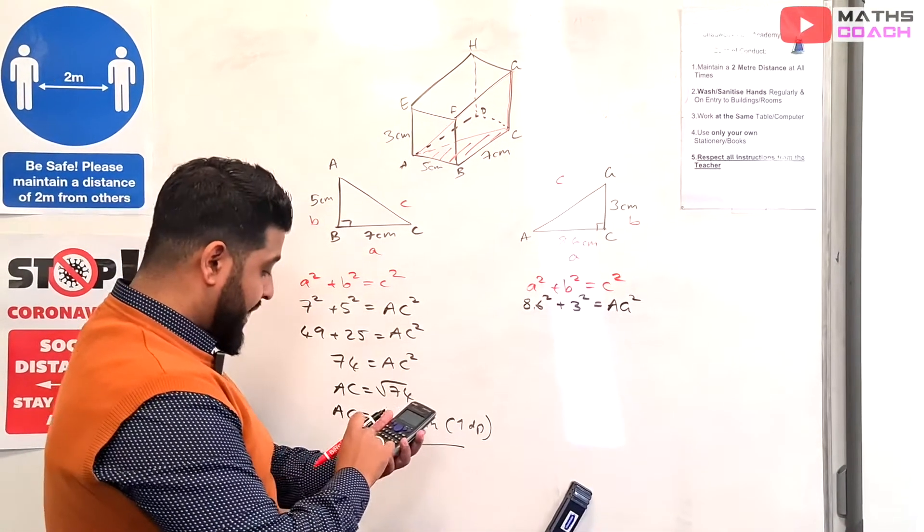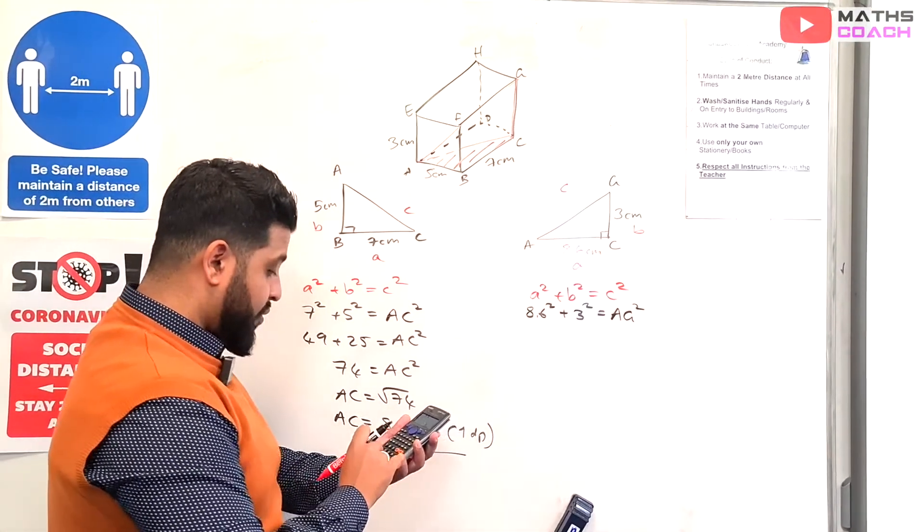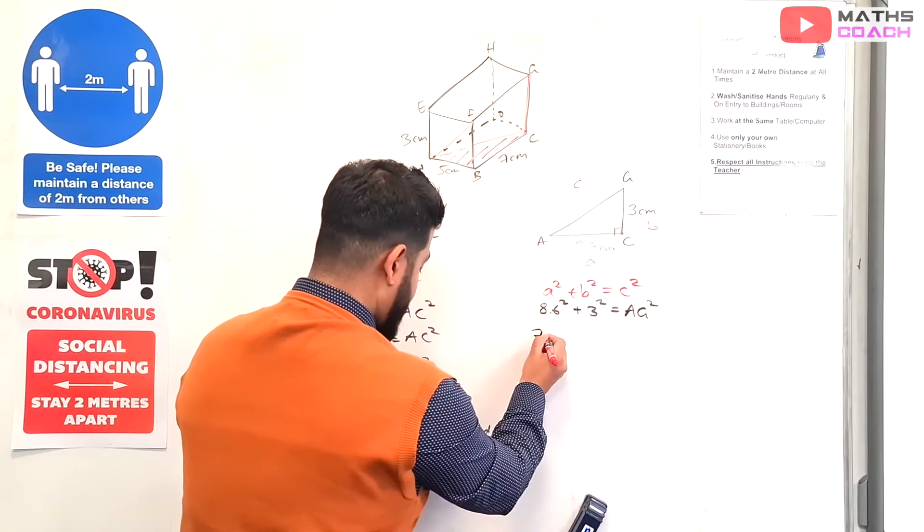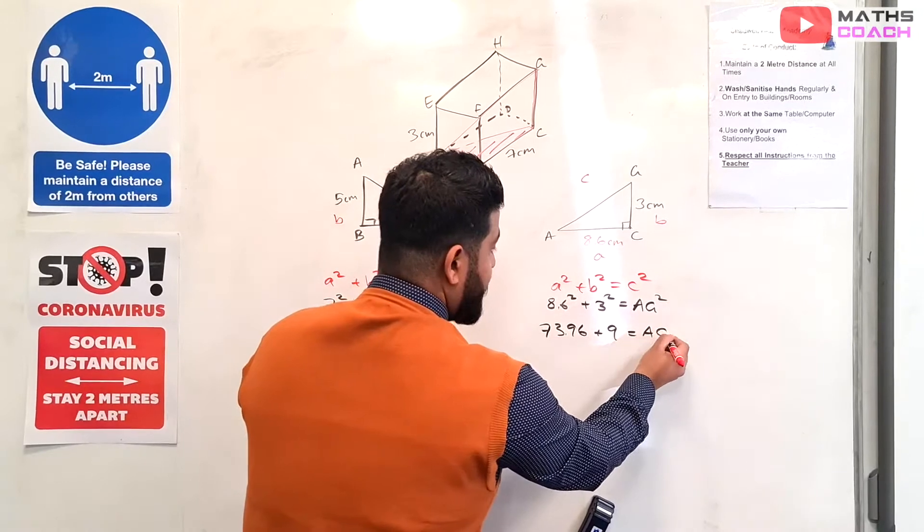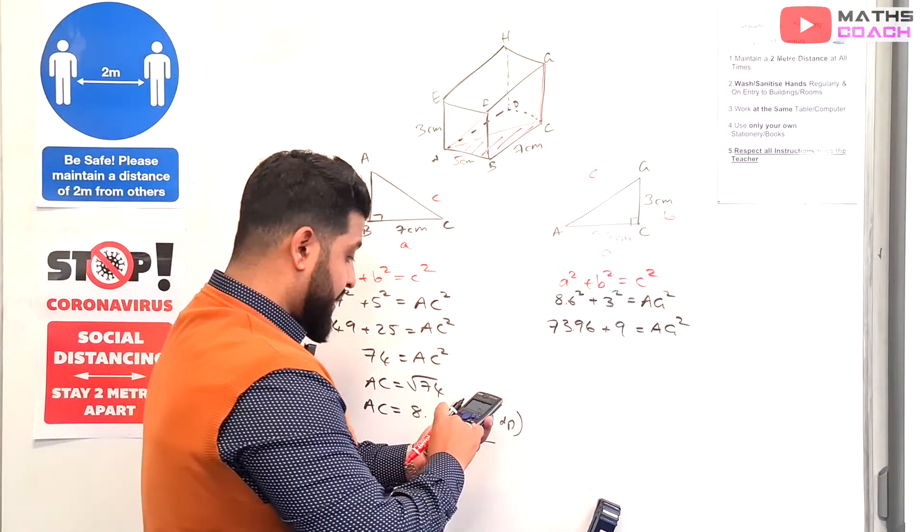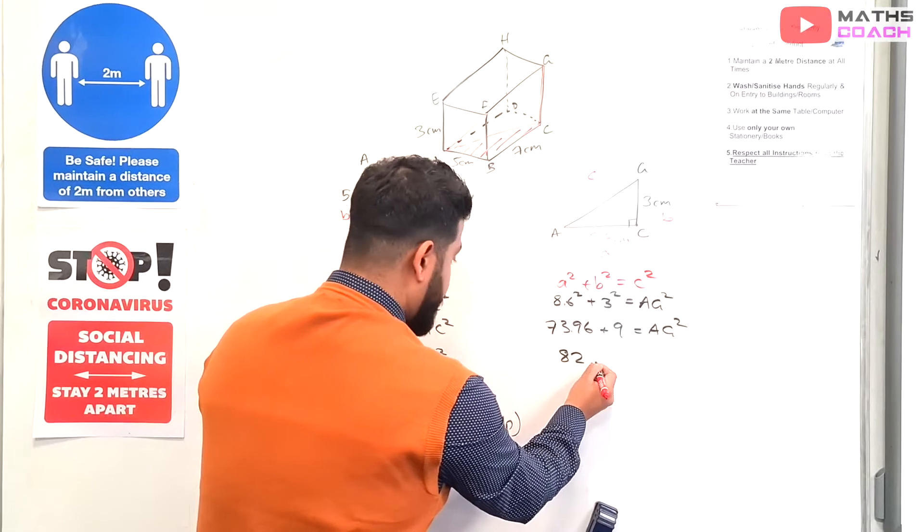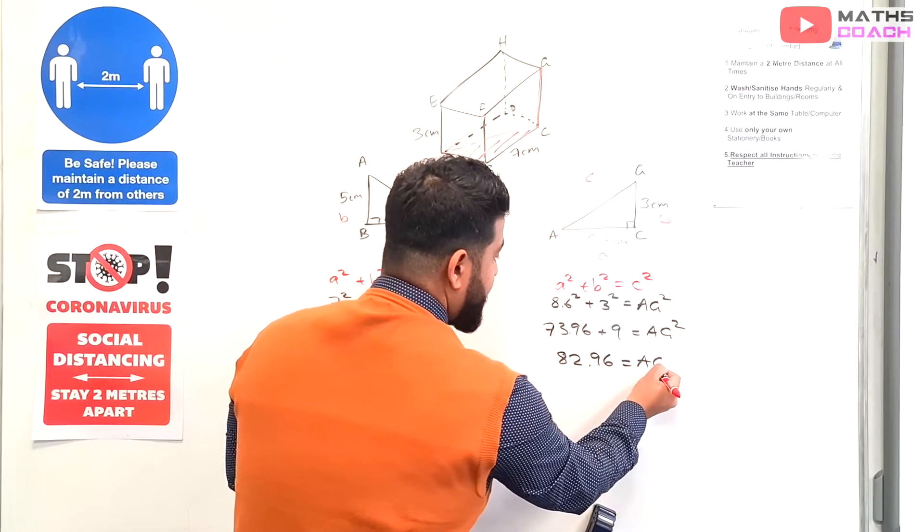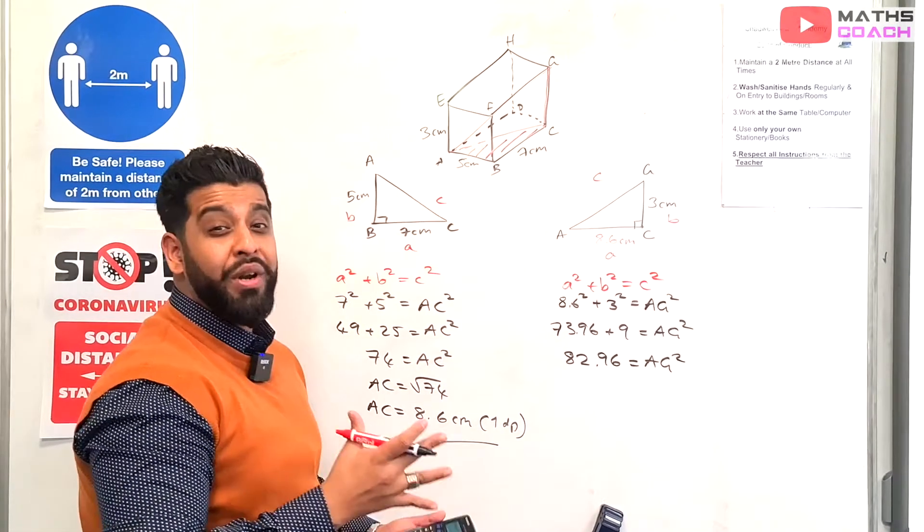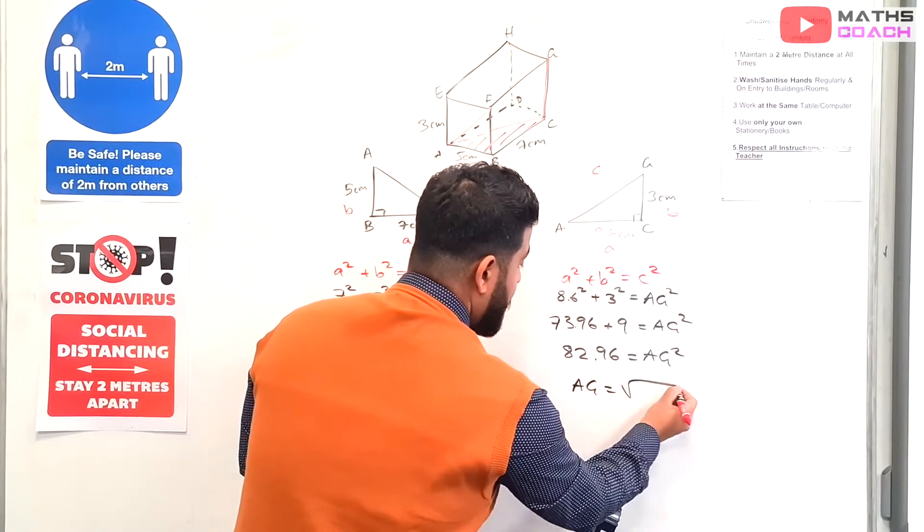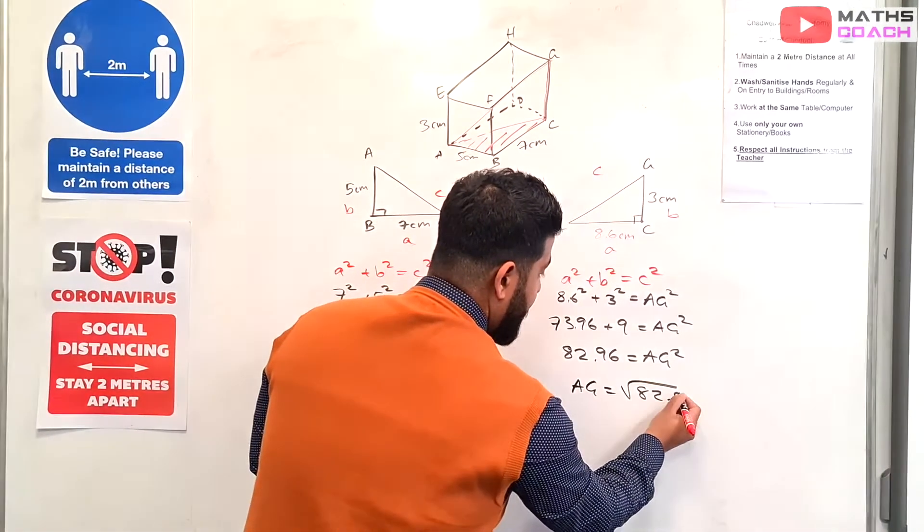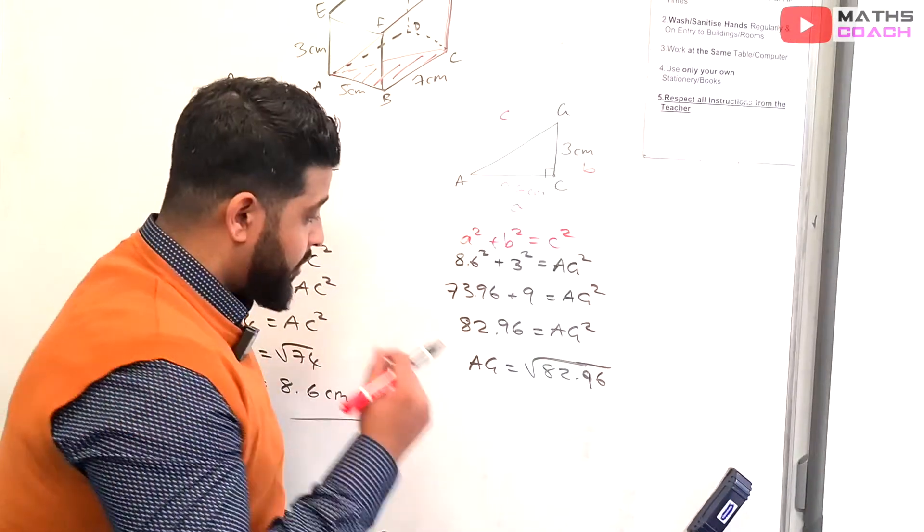Right. So we're going to work this out on our calculators now. So 8.6 squared gives us 73.96. 3 squared is 9. And that gives us AG squared. We add them together, so plus 9, that gives us 82.96. So that's AG squared. Once again, we want AG, the length AG. So we are going to square root our answer, 82.96.